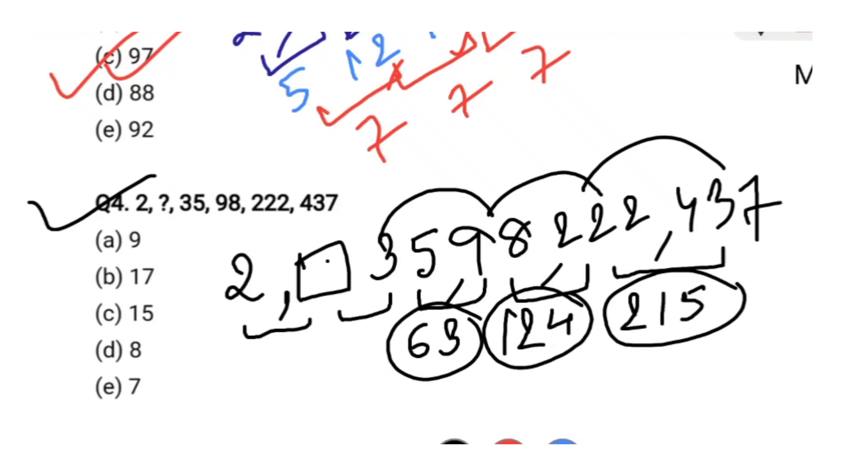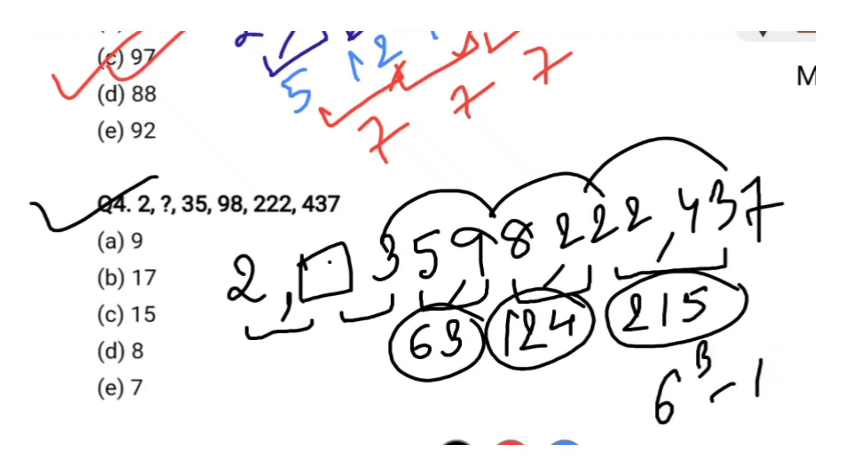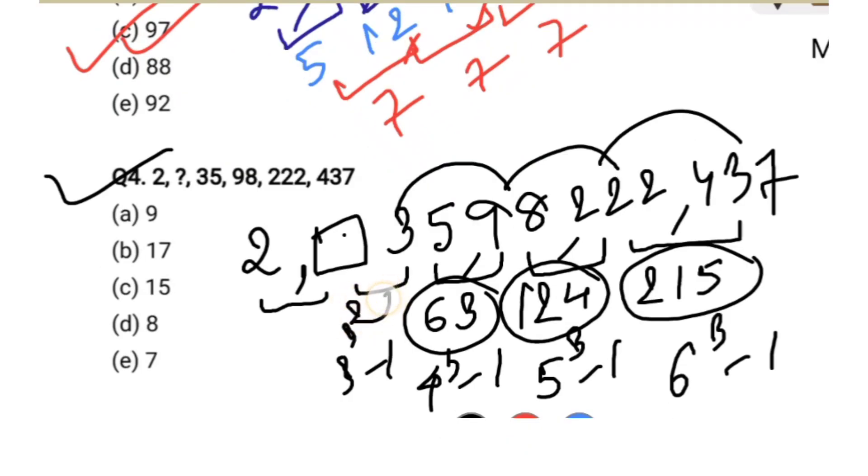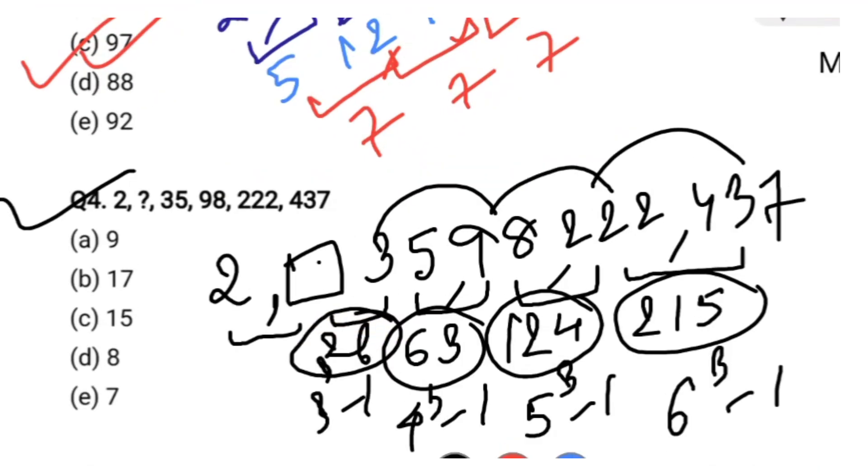If we compare this number, the finding 63, 124, 215. Let's see 215 is 6 cube minus 1, 215. It is 5 cube is 125, so 5 cube minus 1 is 124. It is 4 cube minus 1 is exactly 63. So it is 3 cube minus 1. 3 cube minus 1 is equal to 26. So if we subtract 35 minus 26, then we will get the number 9 here. So option A is the correct option.